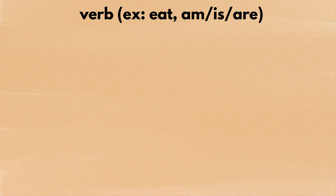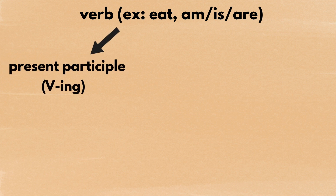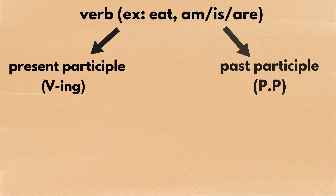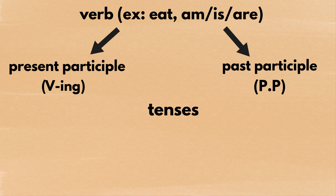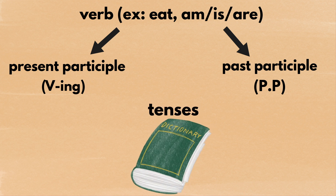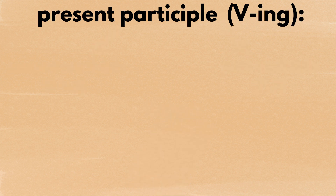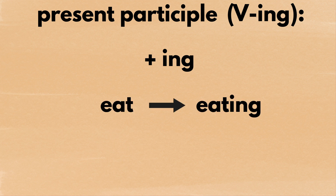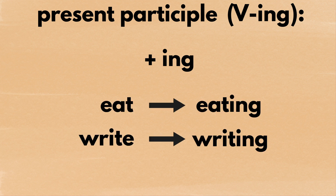Every verb in English can be made into a present participle or a past participle. These participles are used to express certain tenses and the dictionary tells us how to make them. Present participles, also known as the ing form of the verb, are the ones you make by adding ing after the verb, as in eat to eating, write to writing.